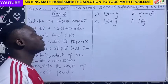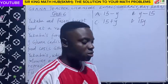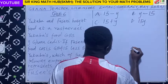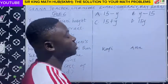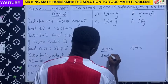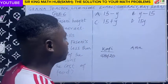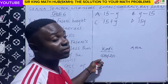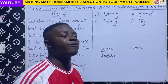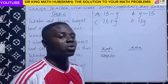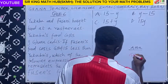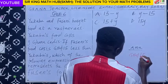Let's use algebra. Let's look at a certain scenario. Let's say we have two friends — Kofi and Amma. They went to a restaurant. We are told that Kofi's food costs 20 Ghana cedis. And then we are told that Amma's food costs 5 cedis less than Kofi. So what would be the cost of Amma's food?